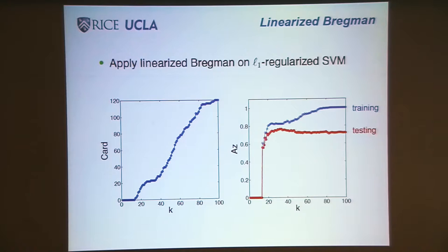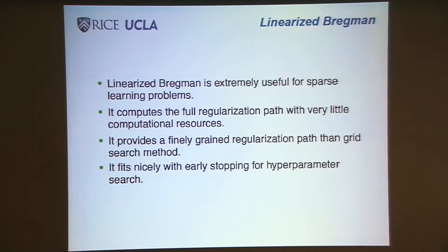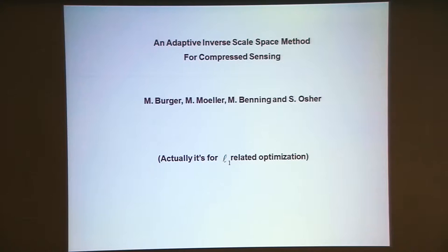Any questions about this? The advantage is, linearized Bregman is useful for sparse learning, because you get a full regularization path with very little computation. You don't have to do a whole sequence of lambdas. You compute the full regularization path with very little computational effort, and you get early stopping. Instead of searching for parameters, search for stopping criterion. That's easier. That's time to stop.